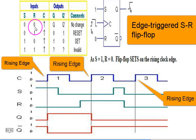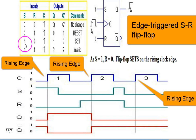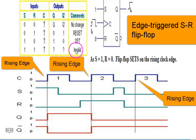If the inputs are 0,0 and clock is high, there is no change in the previous state. If S is 0 and R is high with clock high, Q will be 0 — that is the reset state. If S is 1 and R is 0 with clock high, Q will be 1 — that is the set state. If both inputs are 1,1 with clock high, that is an invalid and forbidden state.